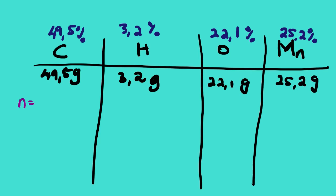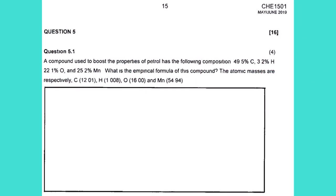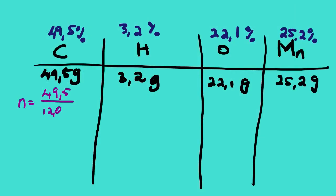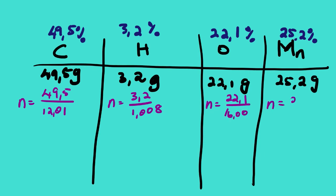From here we calculate the number of moles of each element. For carbon: 49.5 divided by 12.01. For hydrogen: 3.2 divided by 1.008. For oxygen: 22.1 divided by 16.00. For manganese: 25.2 divided by 54.94.